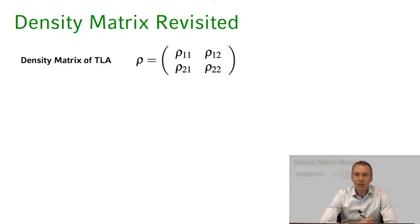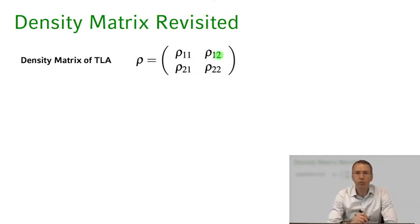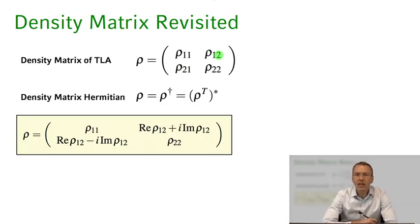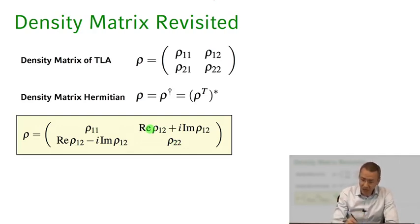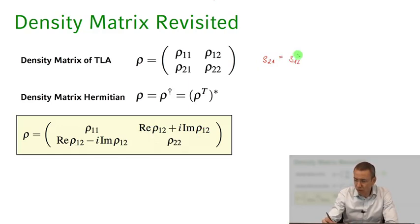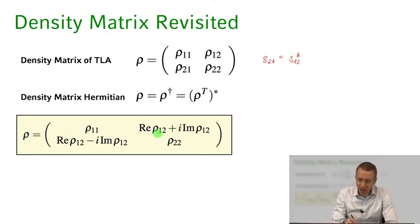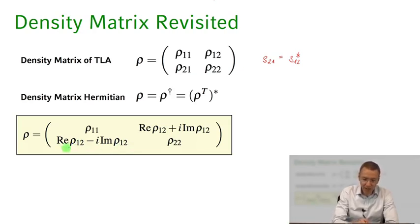Let me remind you of the density matrix of our two-level atom. We have the populations rho-1-1 and rho-2-2, and we have the coherences rho-1-2 and rho-2-1. This density matrix is Hermitian, meaning that if we transpose it and take the complex conjugate, it gives the same original density matrix. That means rho-1-1 and rho-2-2 have to be real, and the off-diagonal components are linked: rho-2-1 is nothing but rho-1-2 complex conjugate.